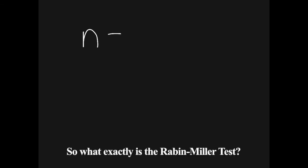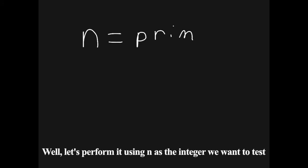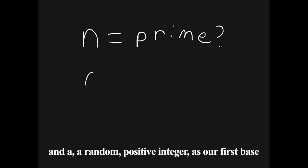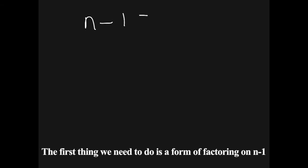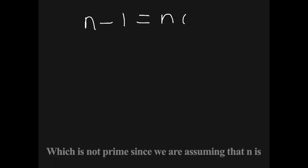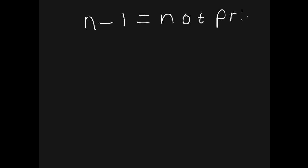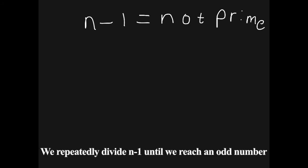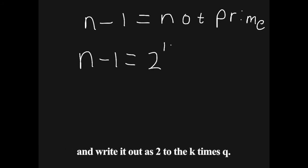So what exactly is the Rabin-Miller test? Let's perform it using n as the integer we want to test and a, a random positive integer, as our first base. The first thing we need to do is a form of factoring on n-1, which is not prime since we are assuming that n is. We repeatedly divide n-1 until we reach an odd number and write it out as 2 to the k times q.